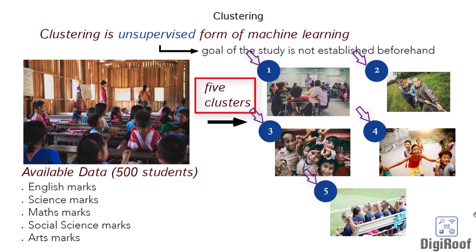For instance, there might be an identified cluster where the students are scoring high in 3 of the subjects and low on 2 of the subjects. Once we identify the unique requirements of this cluster of students, we can change the studying plan accordingly. Another benefit of clustering is that once the clusters are formed, new data can be instantly placed in one of the identified clusters. For example, if scores of 12 new students are given, these new students can be placed in one of the 5 identified clusters and their studying needs can be identified.